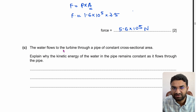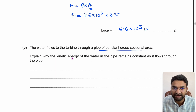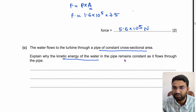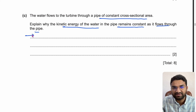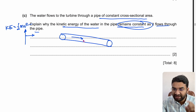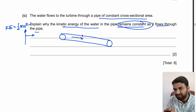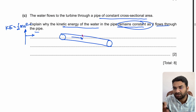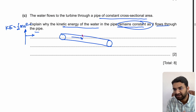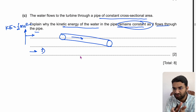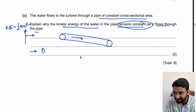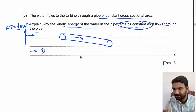The water flows through a pipe of constant cross-sectional area. Explain why the kinetic energy of the water remains constant as it flows through the pipe — this is a 2-mark question. KE = ½mv². Since the cross-section is constant, the volume of water passing through remains the same. The density of water also remains the same, so the velocity remains constant, and therefore the kinetic energy remains constant.